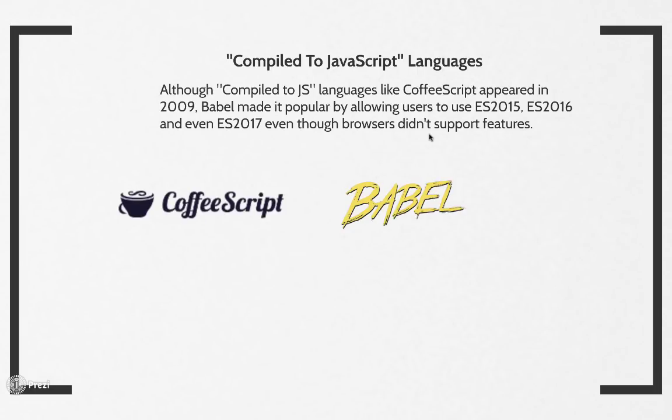Although compile-to-JavaScript languages like CoffeeScript appeared in 2009, it was actually Babel that made this approach popular — by allowing users to use ES2015, ES2016, and even ES2017, the future JavaScript, even though browsers did not support them yet. You could write in any of these and then convert them to regular JavaScript using Babel.